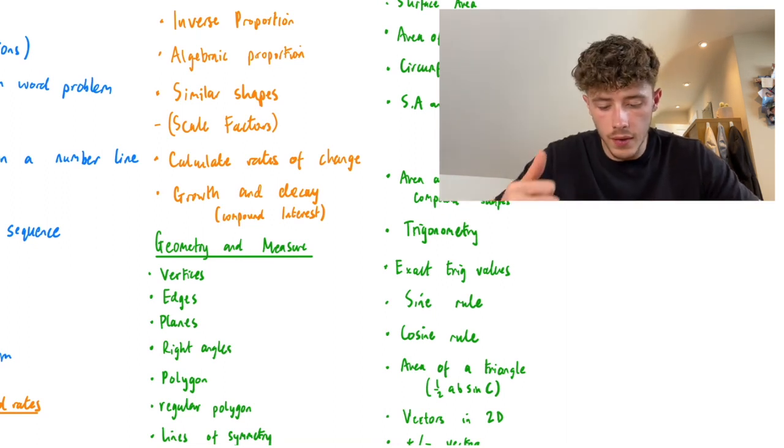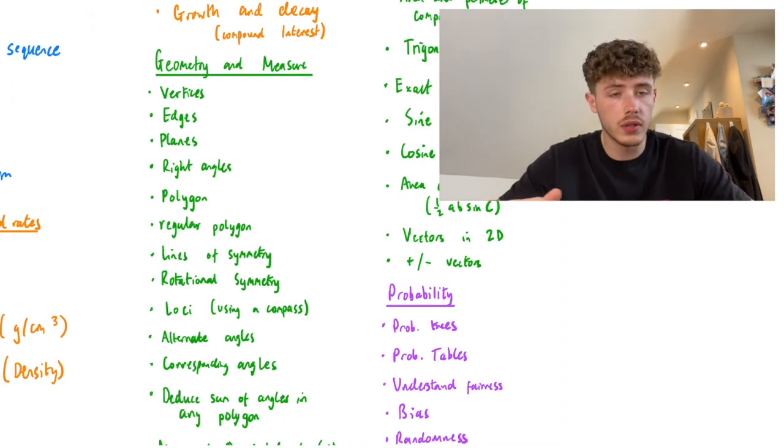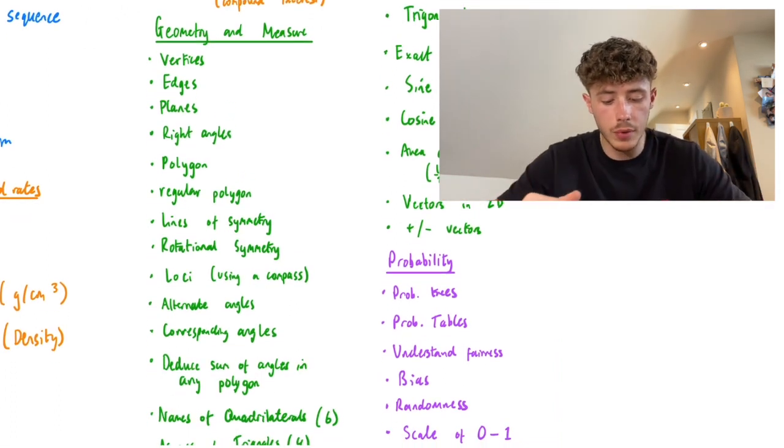Green, geometry and measure. Vertices, edges, planes, right angles, polygons, regular polygons, lines of symmetry - all of those terms you need to know what they mean. Rotational symmetry and finding them.